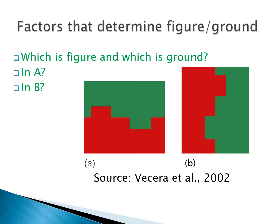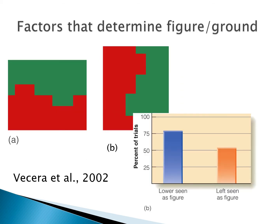There have been lots of studies asking what factors determine how we figure out the figure from the ground and how we segregate the scene. If I ask you in this example which is the figure and which is the ground — in A, think about what you first pull out as figure, and now in B, what seems like the figure. In A, a larger percentage of people saw the lower part of the scene as figure.